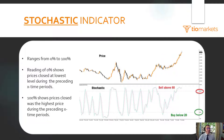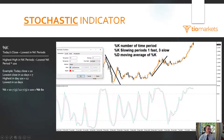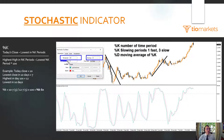A reading of zero shows that prices closed at the lowest level during a preceding time period, and a reading of 100% shows prices closed at their highest price during that period. We have Percentage K — in our example, 10 periods — and a Percentage K slowing period where 1 would be fast and 3 would be slow, and then your Percentage D, which is a moving average of Percentage K.